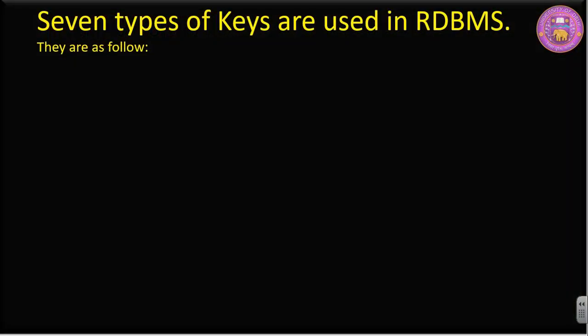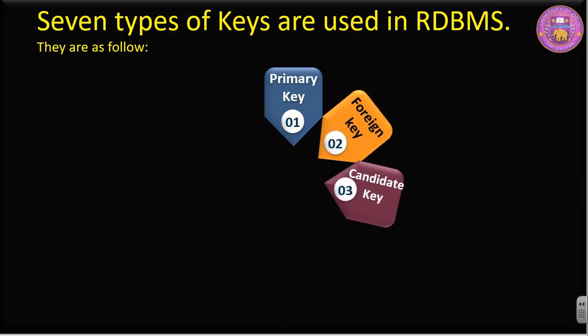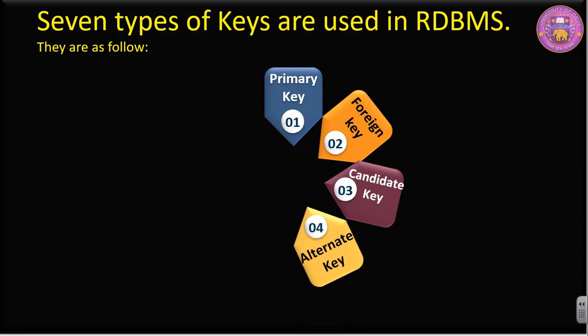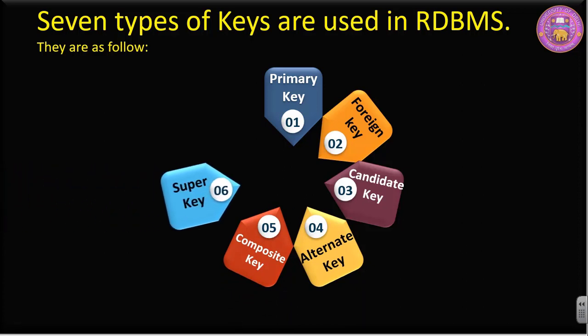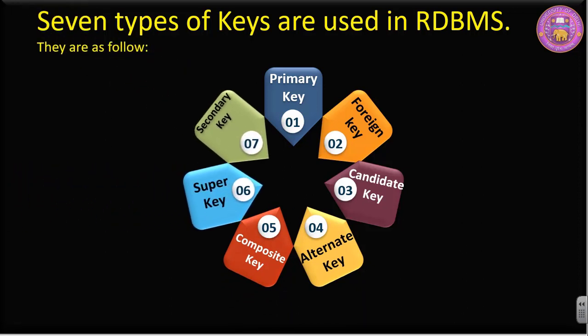There are seven types of keys which are used in RDBMS. They are as follows: the first one is primary key, the second is foreign key, the third is candidate key, the fourth is alternate key, the fifth is composite key, the sixth is super key, and the last one is secondary key.